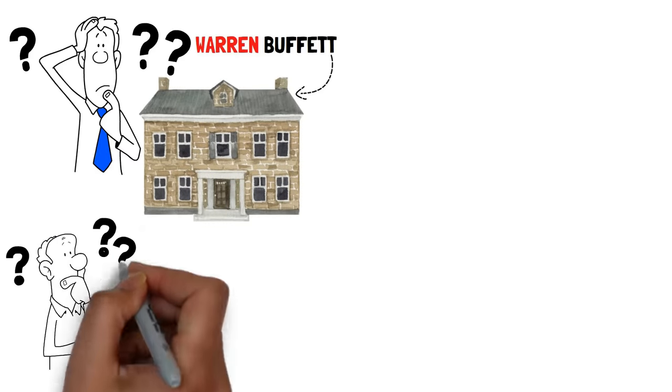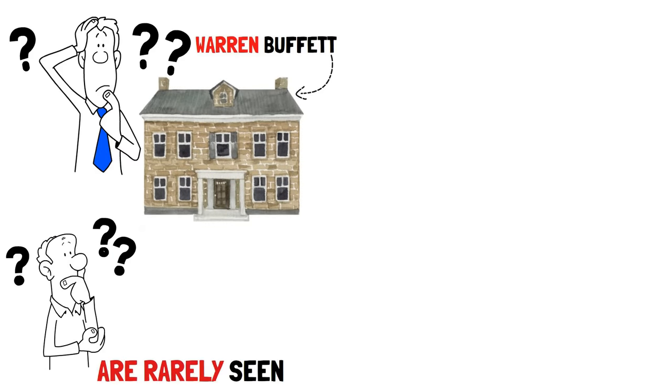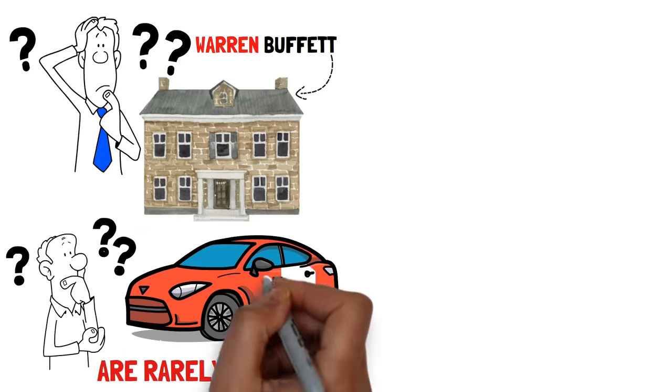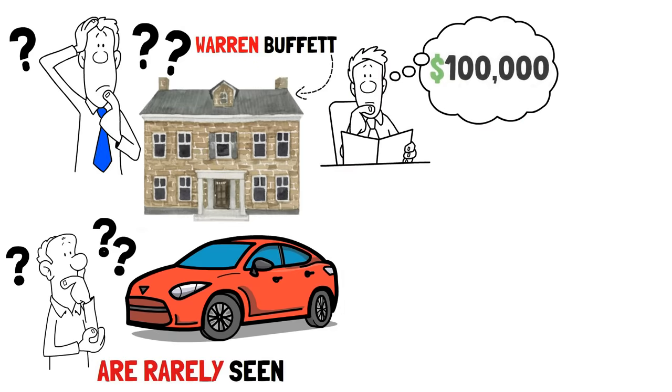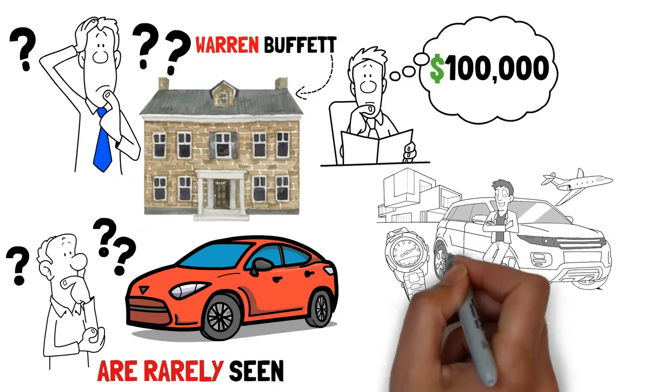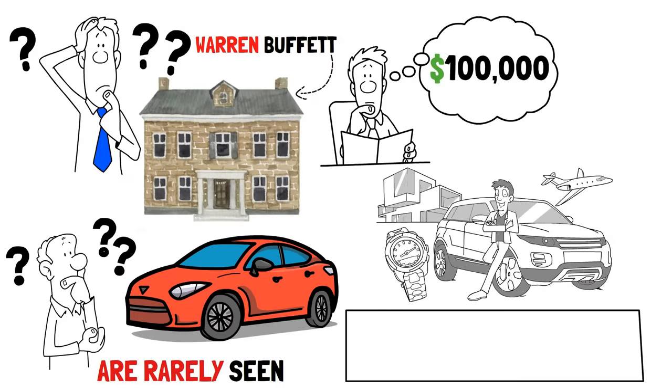Have you ever wondered why billionaires like Warren Buffett choose to live in the same old house they bought before they got filthy rich? Or why some of the wealthiest people are rarely seen flaunting flashy cars or the latest designer brands? You'd think with all those zeros in their bank accounts, they'd be the first to splurge, right? But here's a little secret. Getting rich isn't the same as staying rich.